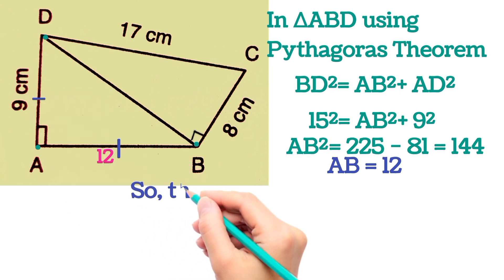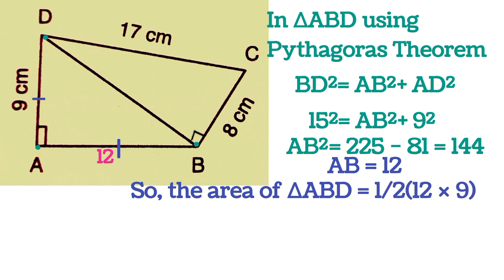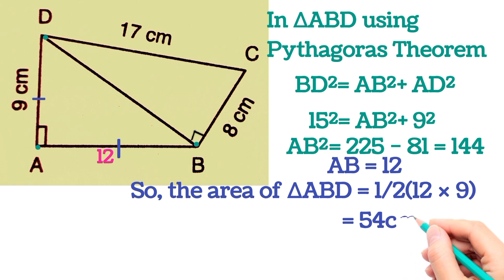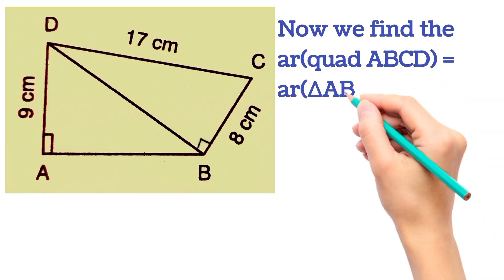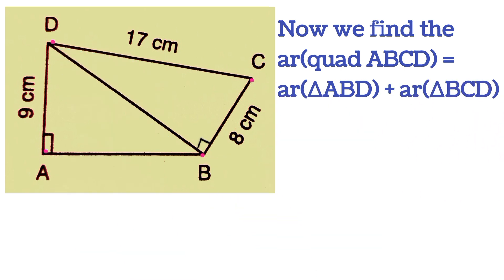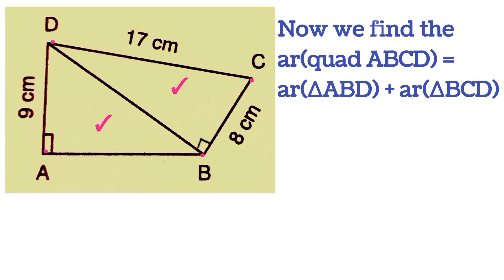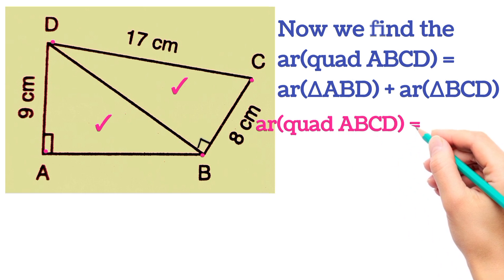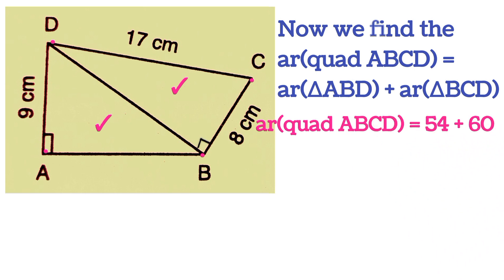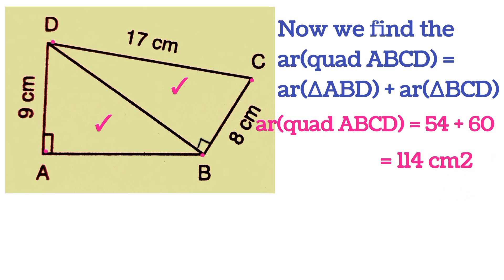The base of triangle ABD is AB = 12 cm and the height is AD = 9 cm, so the area is ½ × 12 × 9 = 54 cm². The area of quadrilateral ABCD is the sum of both triangles: 54 + 60 = 114 cm².